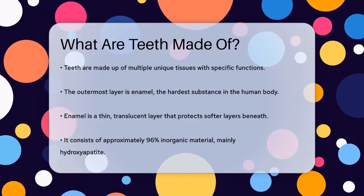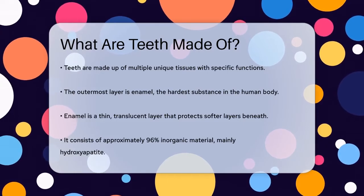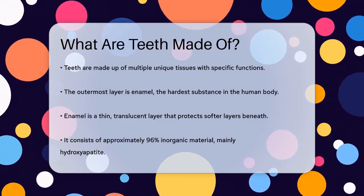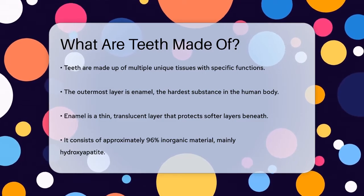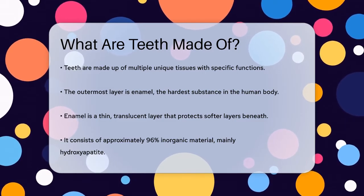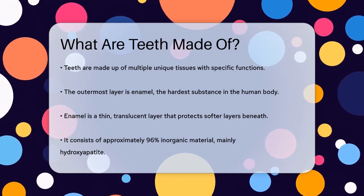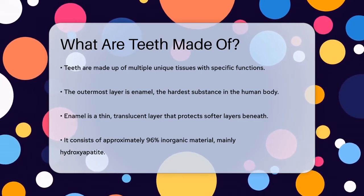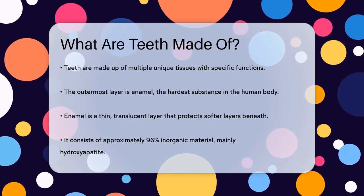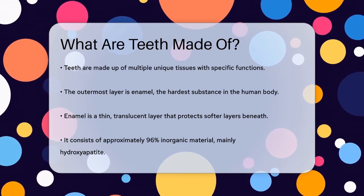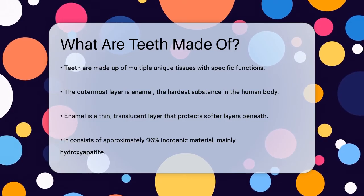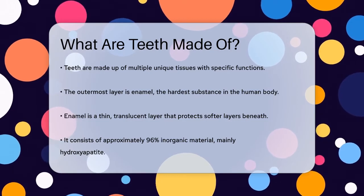The first layer you'll encounter is the enamel, which is the hardest substance in the human body. Enamel is a hard, thin, translucent layer that covers the crown of the tooth, protecting the softer layers beneath. It consists of about 96% inorganic material, primarily hydroxyapatite, a crystalline calcium phosphate compound, and less than 1% organic material, along with a small amount of water.